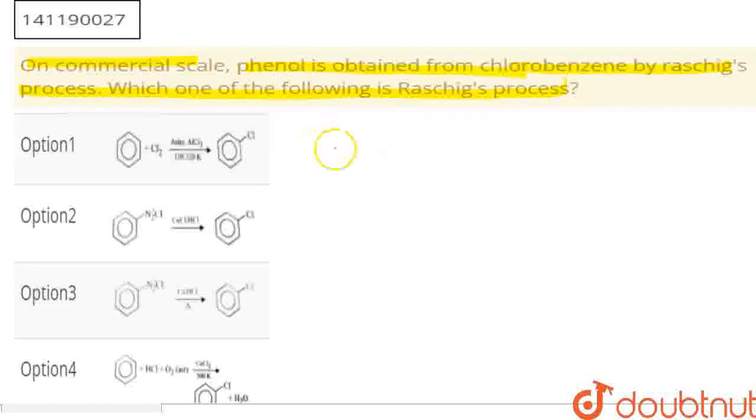Raschig's process: we take a mixture of benzene vapors in the presence of air, which means oxygen, plus hydrogen chloride. And it will pass over CuCl2 at 500 Kelvin. So, what do we have here? Chlorobenzene is formed.